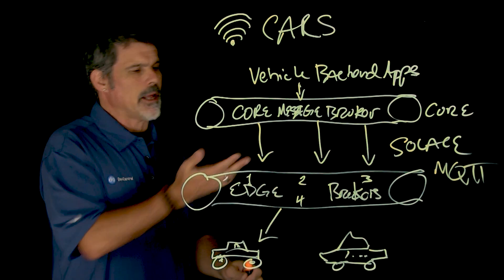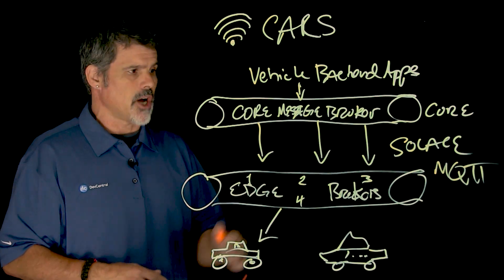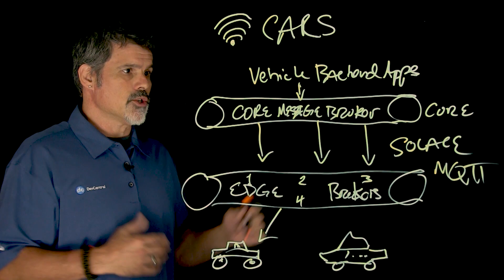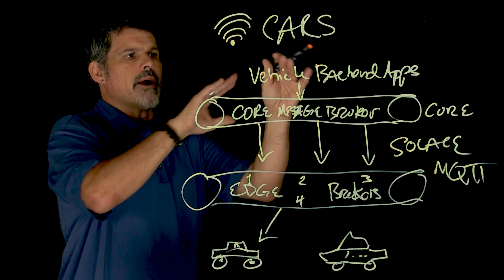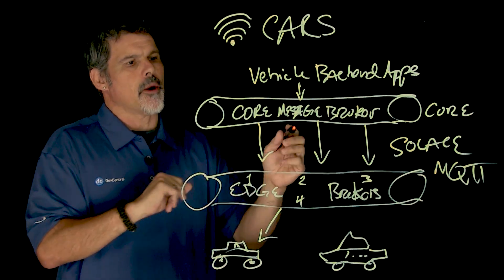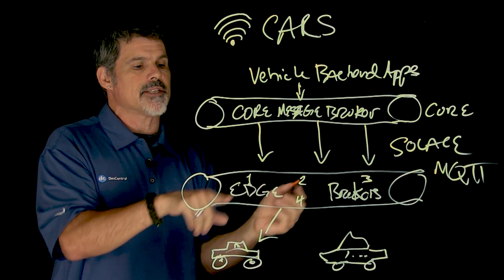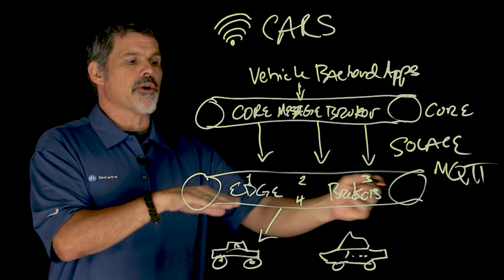Message queuing telemetry transport. There's a light board lesson on this you can check out. So, software app comes in, goes to the core message broker. Now, the core message broker then sends that information to your edge brokers.